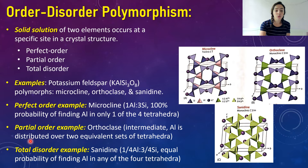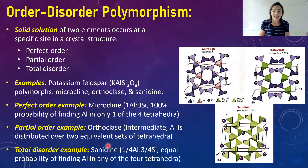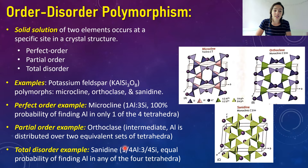Sanidine, the total-disorder polymorph of K-spar, has an equal probability of finding an aluminum ion in any of the four tetrahedral sites — randomized rather than fixed. Because of this, instead of a 100% probability in one site, it is a one-fourth to three-fourths aluminum-to-silicon ratio distributed equally across all four tetrahedral sites. The overall composition is the same as microcline; only the arrangement differs.